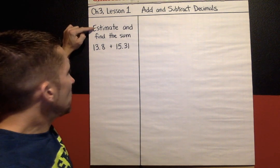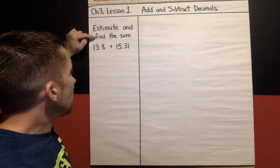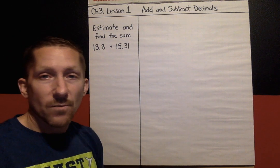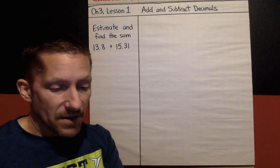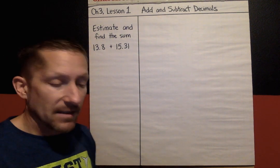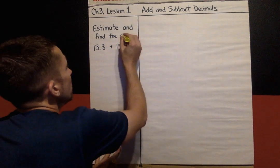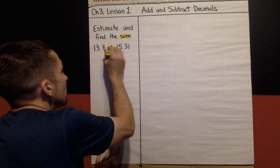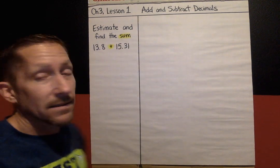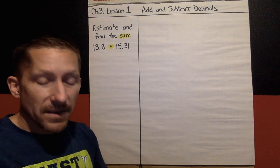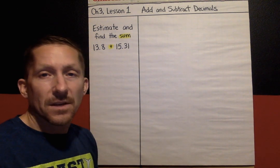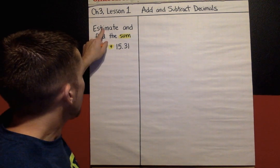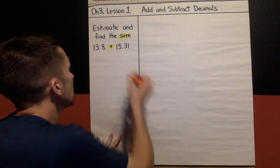First problem we're going to do is estimate and find the sum of 13.8 plus 15.31. So the first thing I want to highlight to you is that the word sum, if you see the word sum, that means automatically you're going to be adding. A sum is an answer to a multiplication problem. So really we're going to do two things here. We're going to make an estimate and find the exact sum.